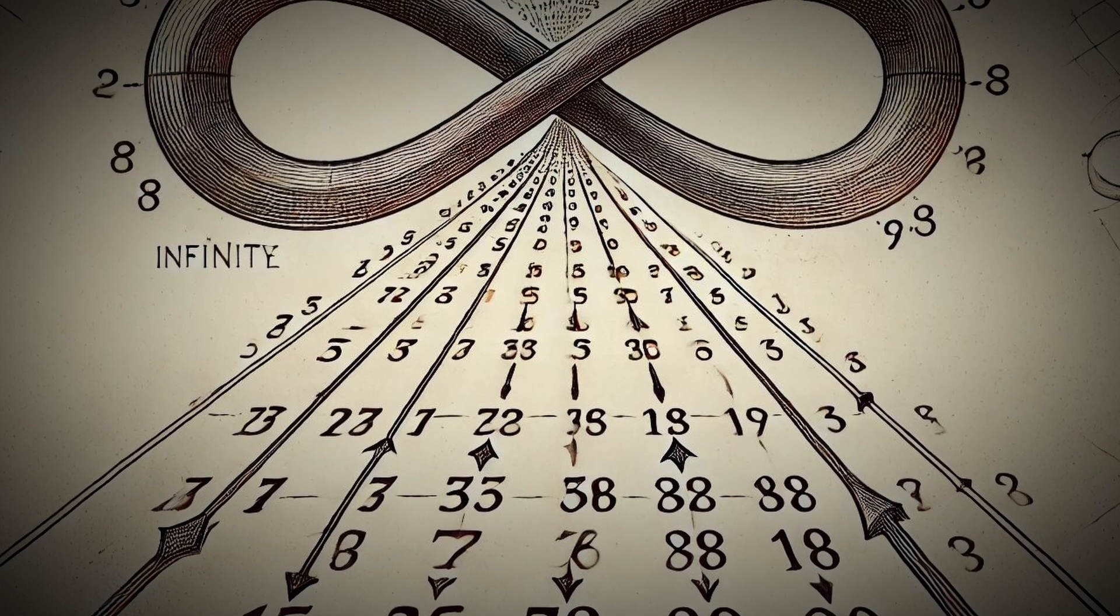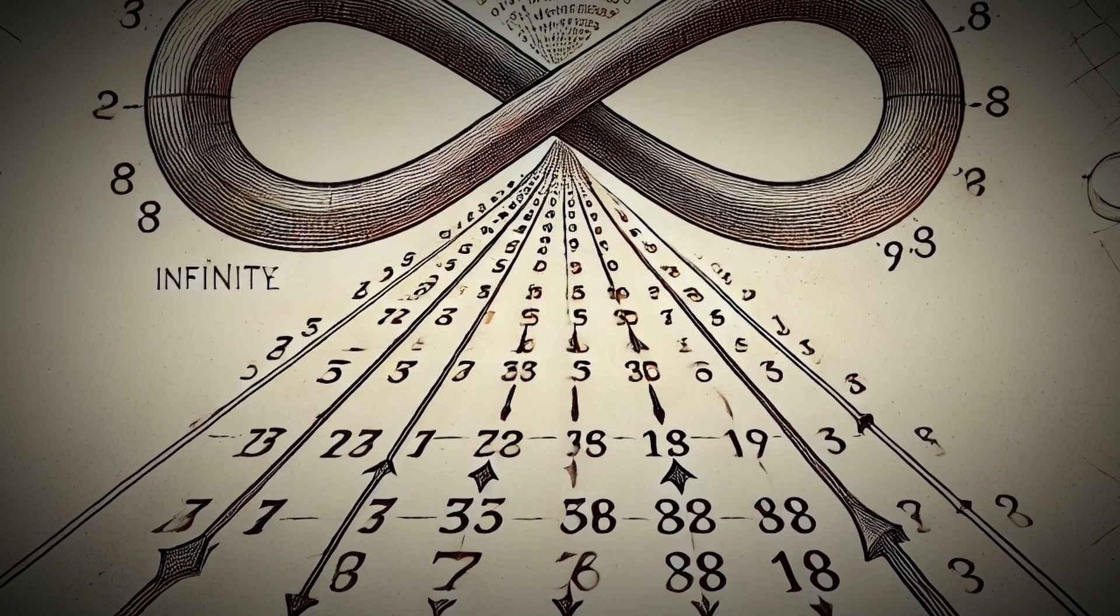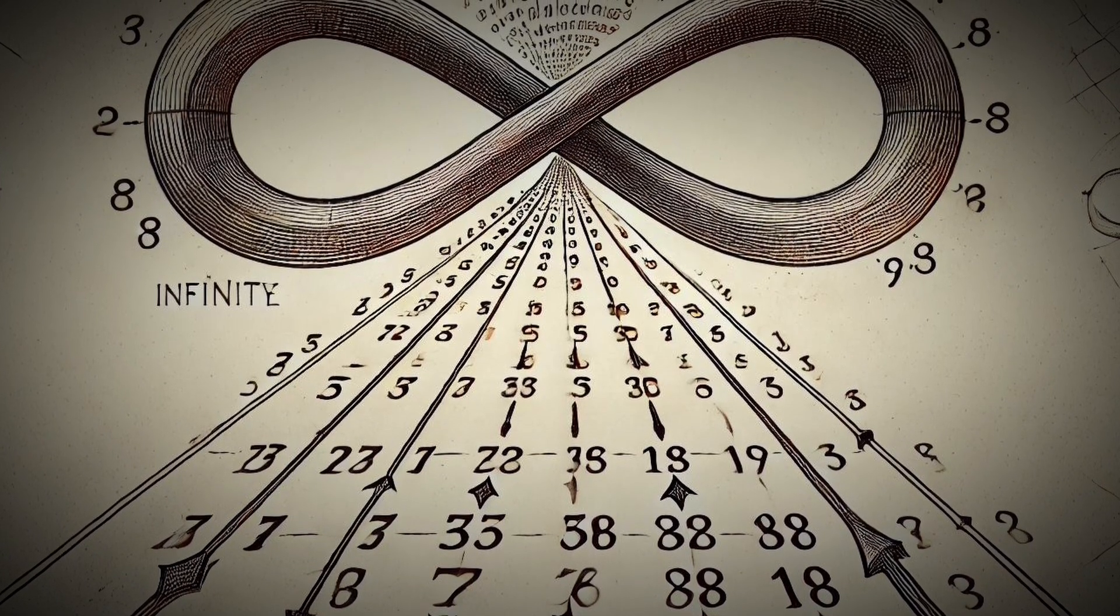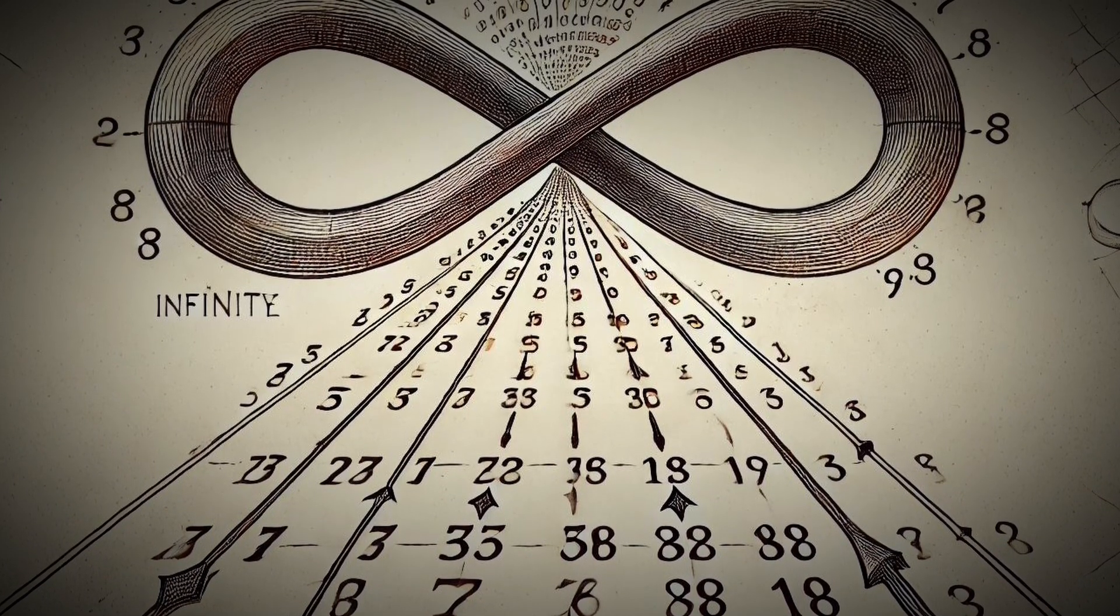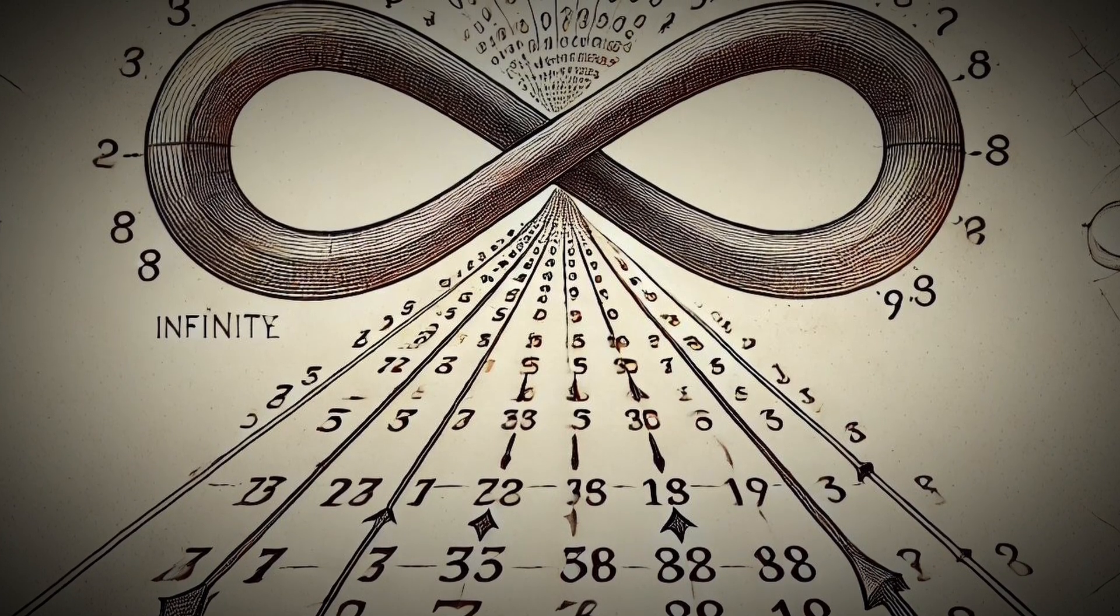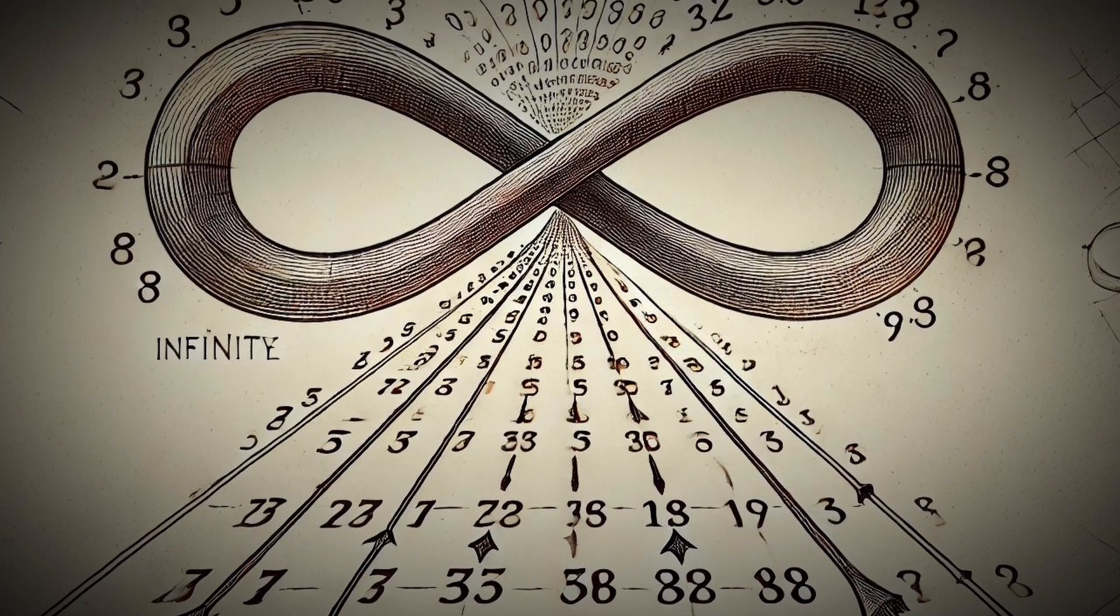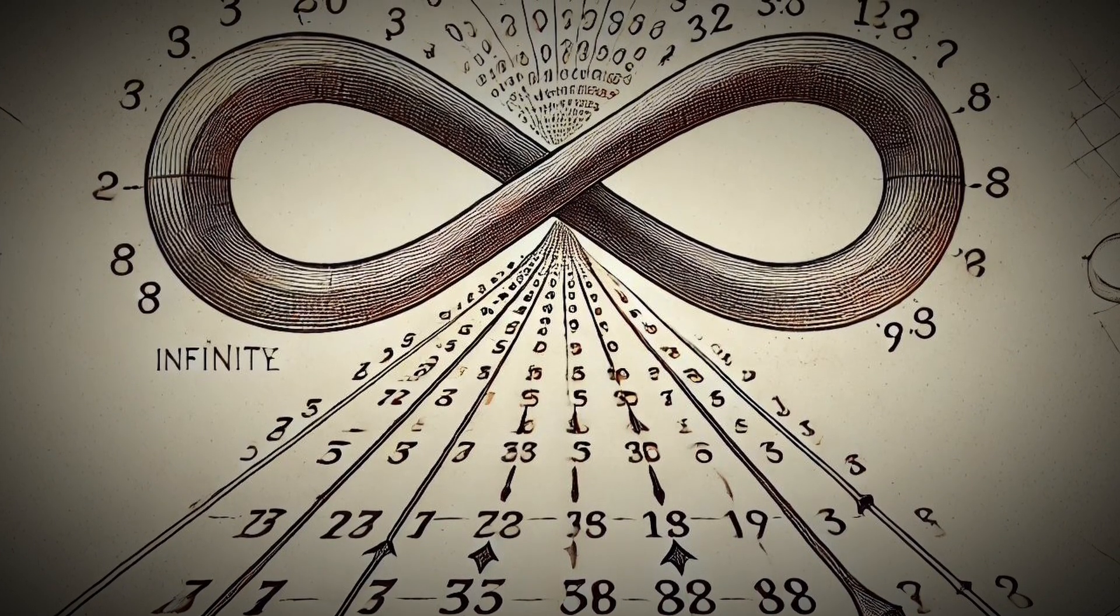Meanwhile, the axiom of choice is a principle in set theory that lets us select elements from an infinite set of objects, even when we have no clear rule to do so. Without the axiom of choice, this paradox couldn't exist. It's what allows mathematicians to select certain points from infinite sets to perform the splitting and reassembling of the sphere.